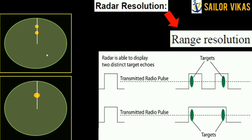To understand further why two targets are sometimes painted separately and sometimes as one paint, we need to understand what pulse length is. So let's now move on to pulse length.